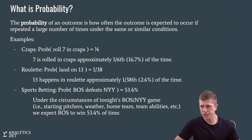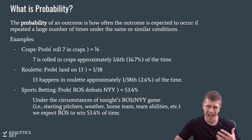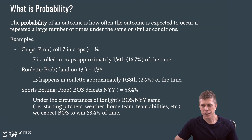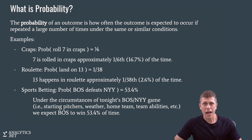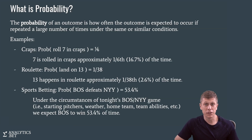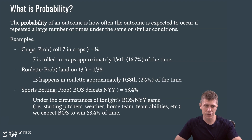In sports betting, we're interested in something slightly different, because we're not talking about things that can actually be repeated over and over again. We're talking about things that only happen once. For example, suppose we're talking about the Boston Red Sox versus the New York Yankees. We're interested in: what's the probability that the Red Sox beat the Yankees? What does it mean that that probability is 53.4%? The game's only going to happen one time — the Red Sox will either win or they'll lose.